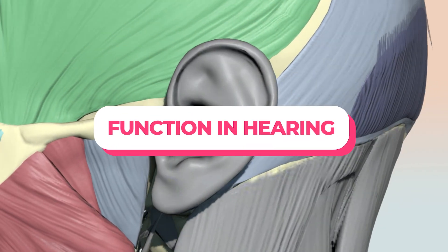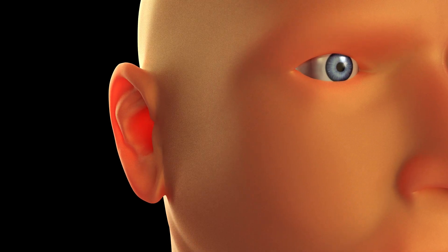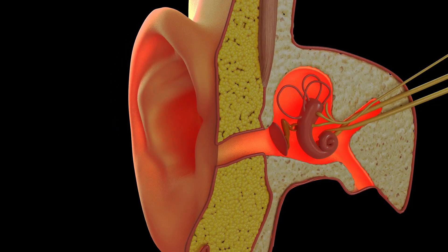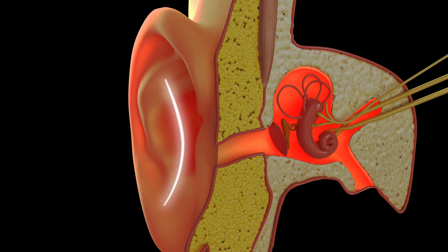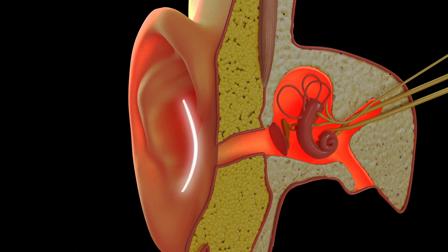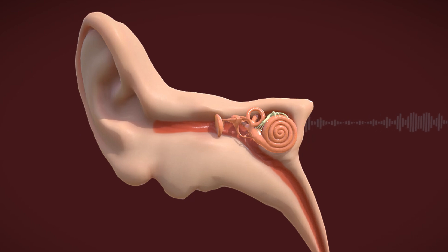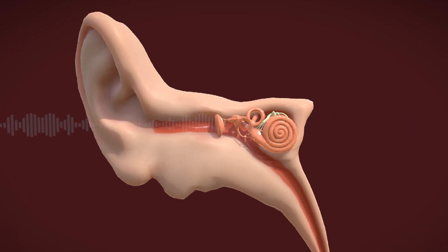The primary function of the pinna is to capture sound waves from the environment and funnel them into the ear canal toward the eardrum. Its shape is designed to efficiently collect and direct sound. Different parts of the pinna help in gathering sounds coming from various directions, which is important for locating the source of a sound in the environment.